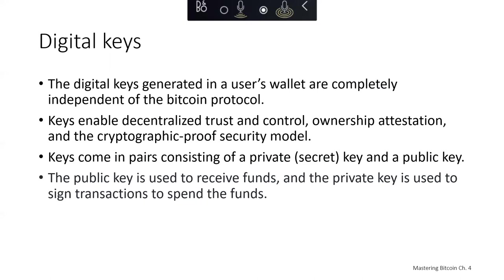Keys enable many interesting properties of Bitcoin, including decentralized trust and control, ownership attestation, and a cryptographic proof security model. Most Bitcoin transactions require a valid digital signature to transfer the cryptocurrency on the blockchain, and that valid digital signature can only be generated using a secret key. Therefore, anyone with a copy of that secret key has the ability to control that Bitcoin and transfer it.